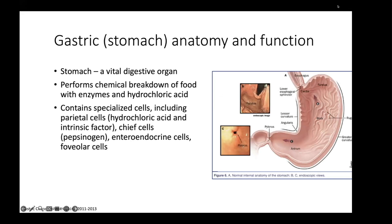The stomach is a vital digestive organ. It performs chemical breakdown of food with enzymes and hydrochloric acid, and it contains specialized cells including parietal cells, which we're going to talk a lot more about. Those make hydrochloric acid and intrinsic factor. There are also chief cells that make pepsinogen to break down protein, and neuroendocrine cells. The stomach can be subdivided into three parts: the antrum, the body — where most of the acid is made — and the fundus.